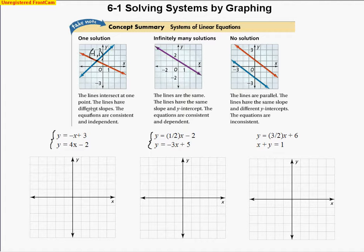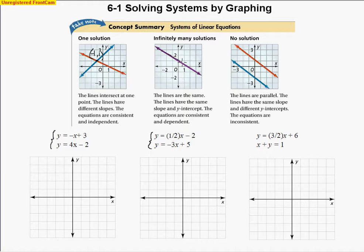Some vocabulary: the lines intersect at one point, which is negative one, one. The lines have different slopes, and the equations are consistent and independent. For infinitely many solutions, we have the same line. The equations may not appear the same at first, but when we solve for y and put them in slope-intercept form, we see they are identical. All points on that line are solutions, so this is a consistent dependent type of equation.